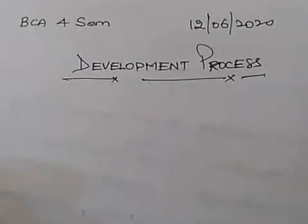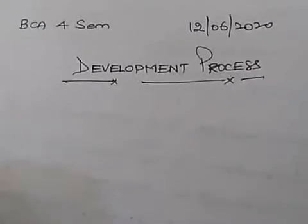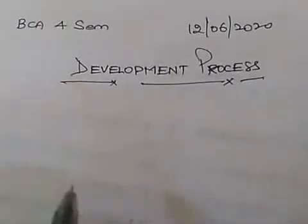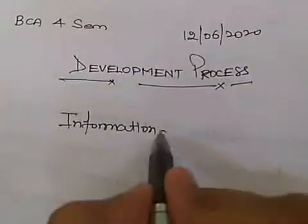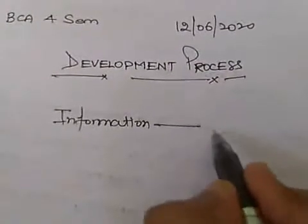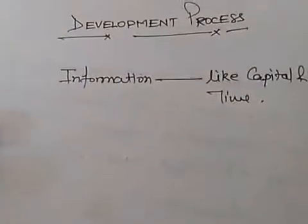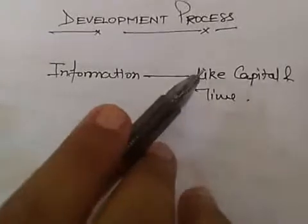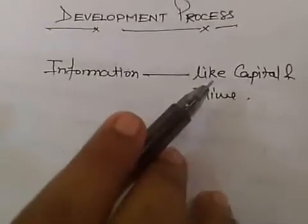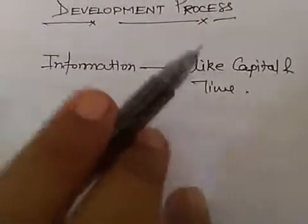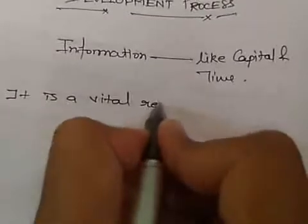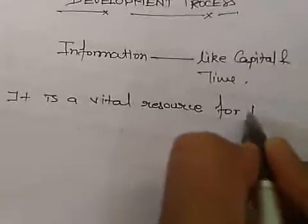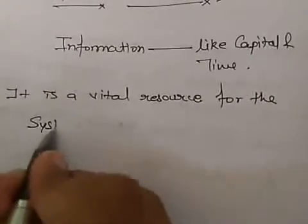Today we will study about the development process of MIS. In MIS, one of the most important things is information, and this information is recognized as a resource like capital and time. Now if these resources are to be managed well, it calls upon management to plan for it and to control it. It is a vital resource for the system.